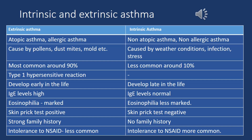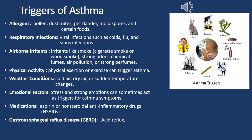Intolerance to NSAIDs is less frequent in extrinsic asthma compared to intrinsic asthma. Triggers of asthma include allergens such as pollen, dust mites, pet dander, mold spores, and certain foods; respiratory infections such as colds, flu, and sinus infections; airborne irritants like smoke, cigarette smoke, wood smoke, strong odors, chemical fumes, air pollution, or strong perfumes; and physical activity or exercise.